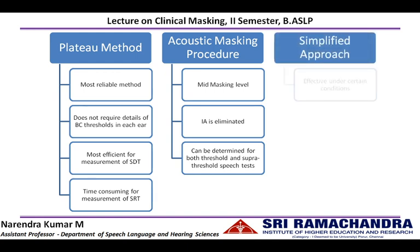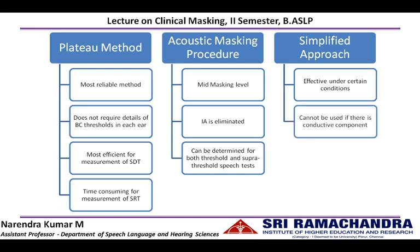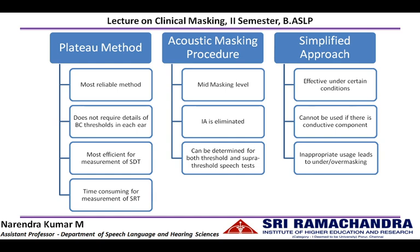The simplified approach is effective only under certain conditions: it cannot be used if there is a conductive component involved, and inappropriate usage may lead to under-masking or over-masking. It is most suitable only when the stimulus is presented at a higher sensation level, hence it is appropriate for speech recognition score masking. By comparing the advantages and disadvantages of these three methods, it is better to use the acoustic masking procedure where we calculate the mid-masking level, as this will be the most effective masking procedure for speech audiometry.